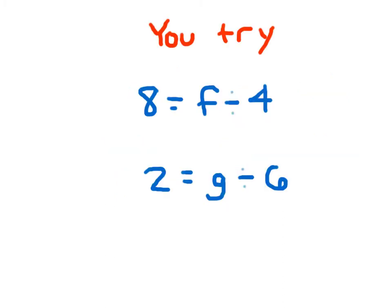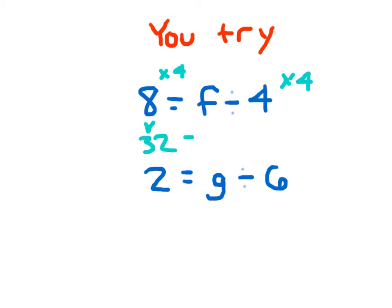Here are two problems for you to try — go ahead and hit pause. For the first problem, it says divided by 4, so we'll multiply by 4 on both sides of the equation. 8 times 4 is 32. F divided by 4 times 4 just leaves us with F, so 32 equals F, or F equals 32. Does 8 equal 32 divided by 4? And the answer is yes, it does.